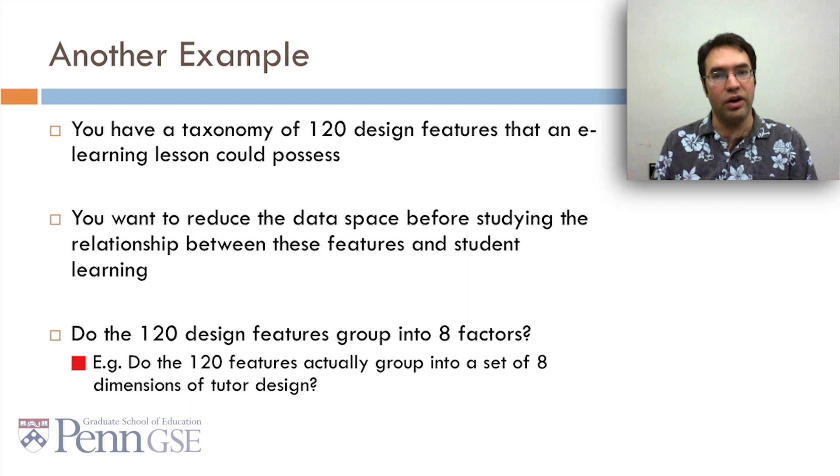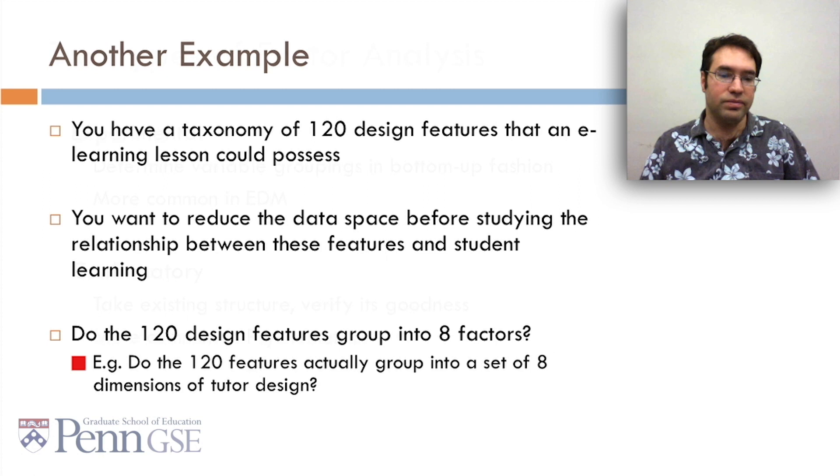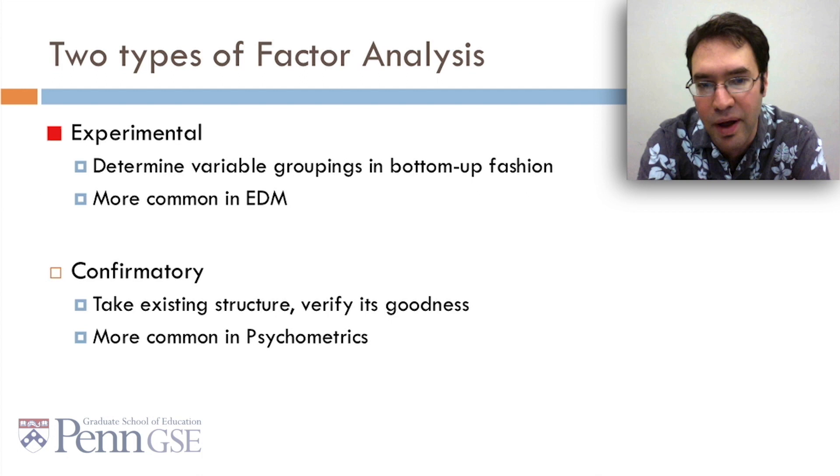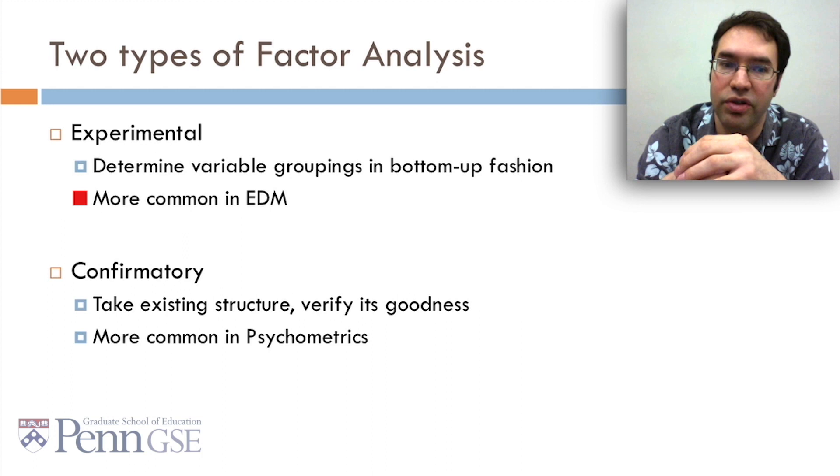Whichever of these problems you're considering, there are two types of factor analysis you can consider. Exploratory, which is where you determine the variable groupings in a bottom-up fashion. This is more the EDM way to do things. And confirmatory factor analysis, where you take some existing structure that some really smart person came up with, and you verify its goodness. And this approach is more common in psychometrics.